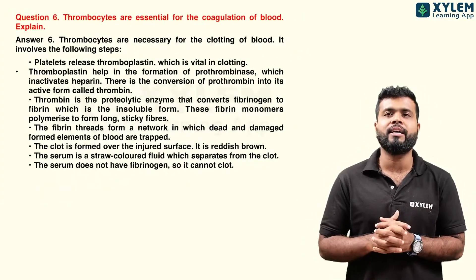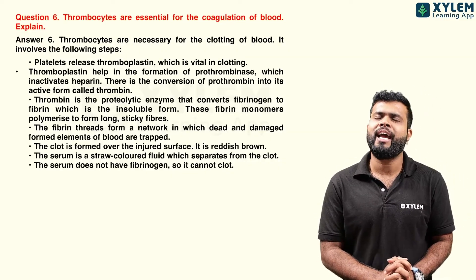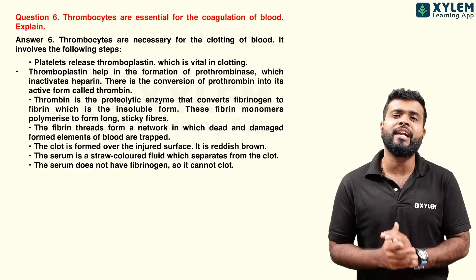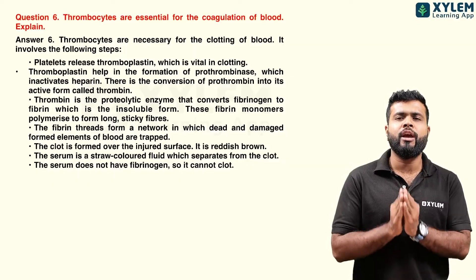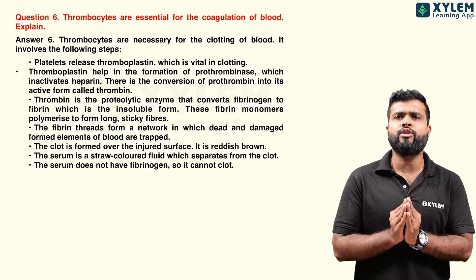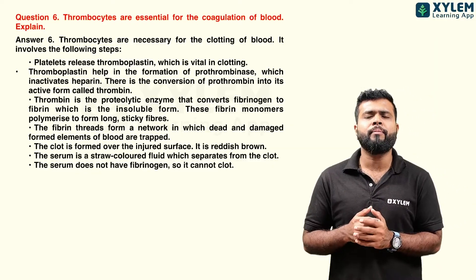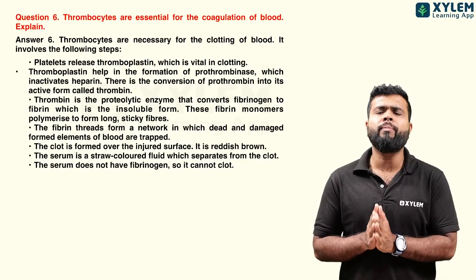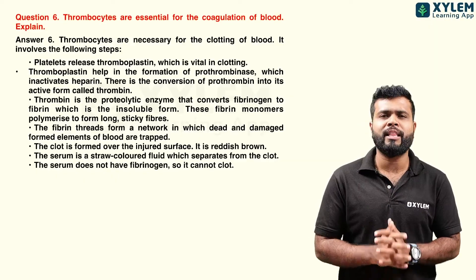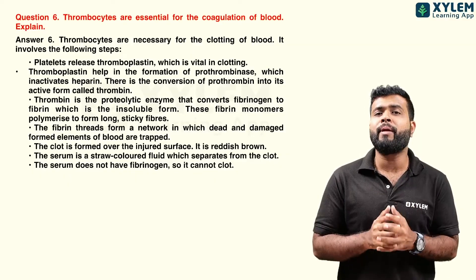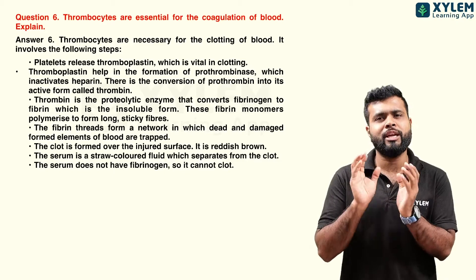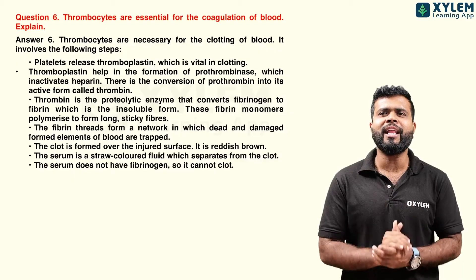Platelets produce one chemical substance — thromboplastin enzyme — which is very important for blood clotting. Thromboplastin actually produces thrombin enzyme. Prothrombin is converted to thrombin. Thrombin converts fibrinogen (inactive form) to fibrin (active form). Fibrin forms a network, completing blood clotting.